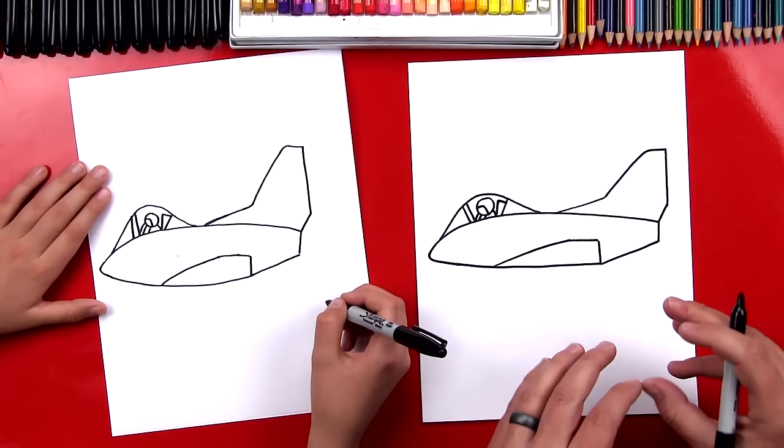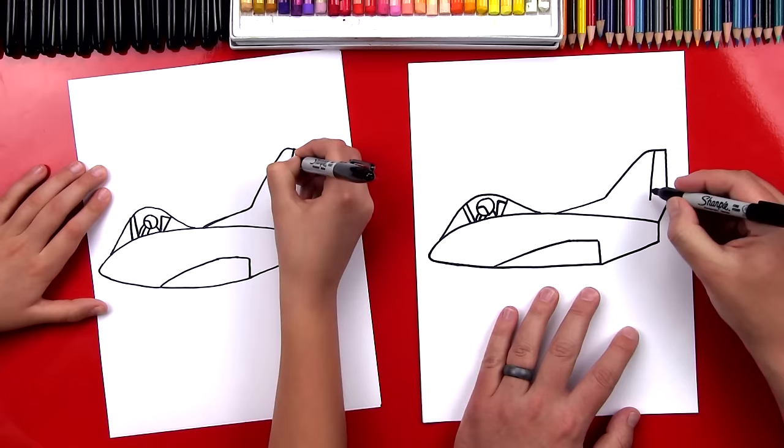Okay, now let's draw a few more details on our plane. Let's draw a flap back here on the tail, so let's draw a line down and then we'll connect it.